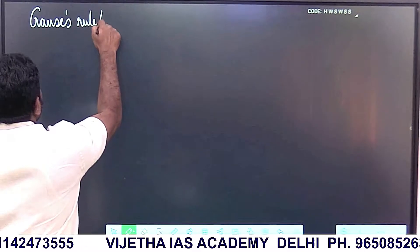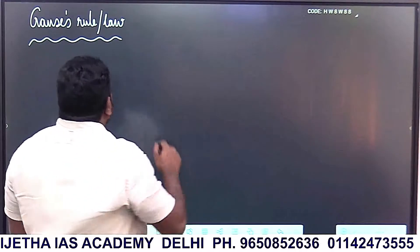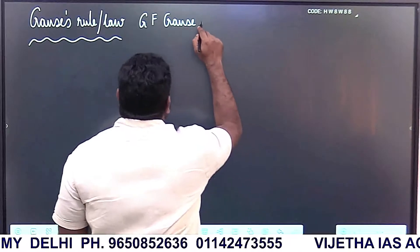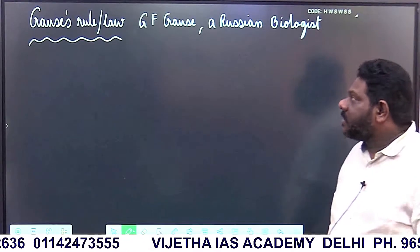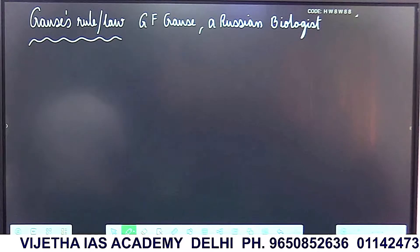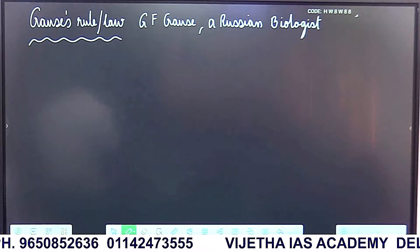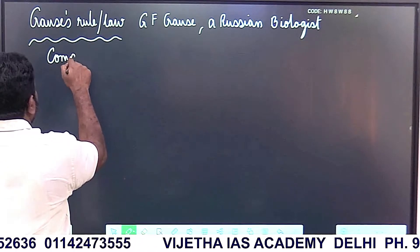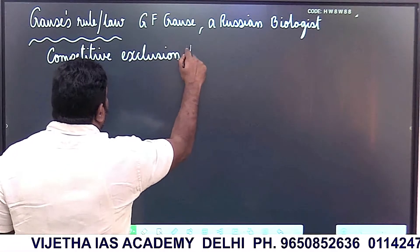Next one is Gauss's rule, given by G.F. Gauss. This law is significant in evolutionary biology and is an important concept in ecological studies. Gauss's rule is also known as the competitive exclusion principle.